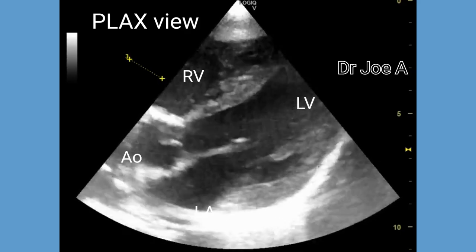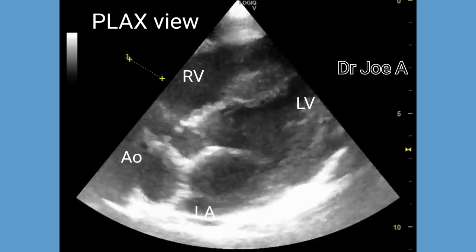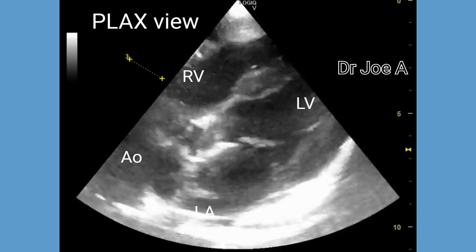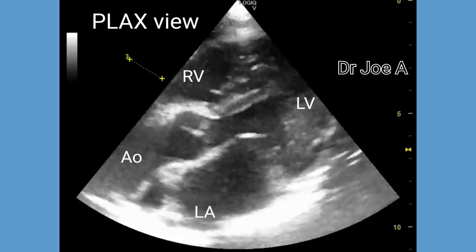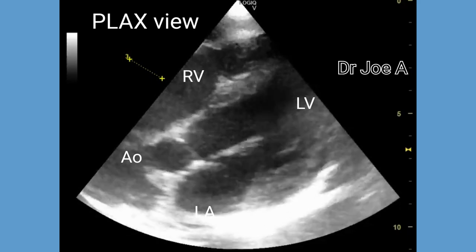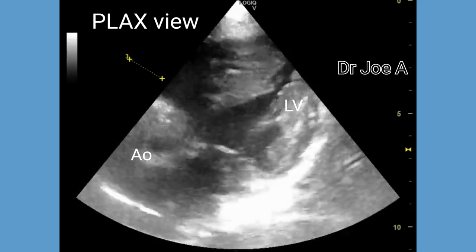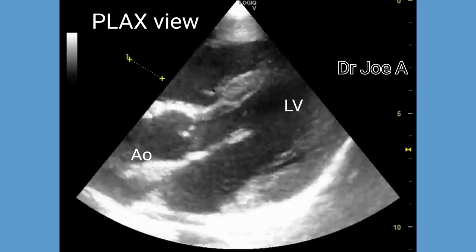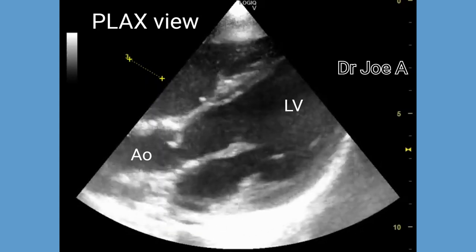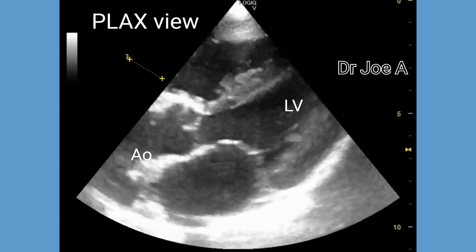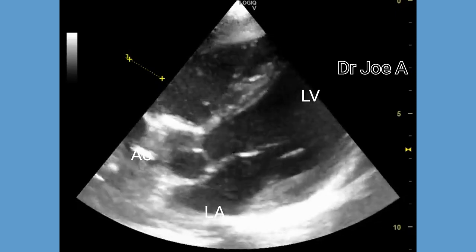Next, we go to the parasternal long-axis view, or PLAX view, to study the left ventricle and the inlet into the left ventricle from the left atrium, and also the outlet from the left ventricle into the aorta. A portion of the right ventricle is also visualized. The parasternal long-axis view is an excellent view to study the mitral and the aortic valves. In this case, both the aortic and the mitral valves appear absolutely normal.